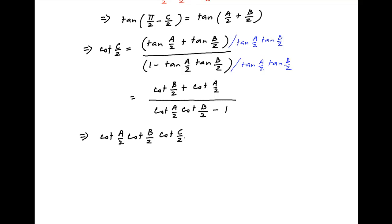Now cross multiplying, this becomes cot of A upon 2 times cot of B upon 2 times cot of C upon 2 minus cot C upon 2 equals cot of B upon 2 plus cot of A upon 2.